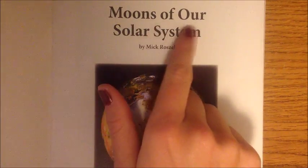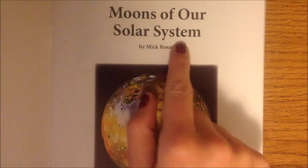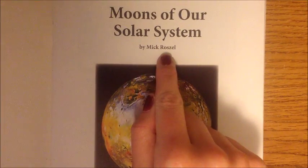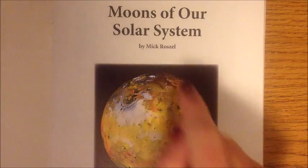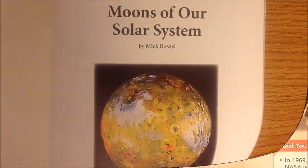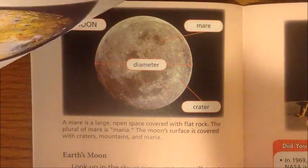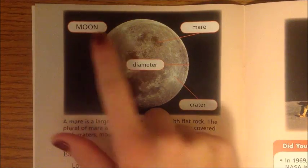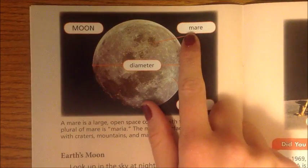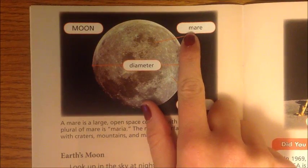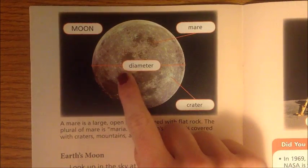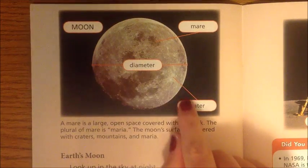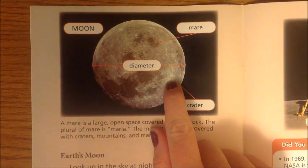Moons of Our Solar System by Mick Razzell. Key vocabulary: Moon, Mare, Diameter, Crater.